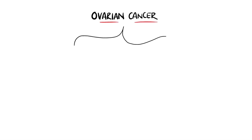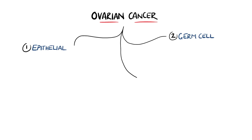Ovarian cancer is divided into several different subtypes, including epithelial, germ cell ovarian tumors, and sex cord stromal tumors. Epithelial ovarian cancer makes up around 90% of ovarian cancer cases.